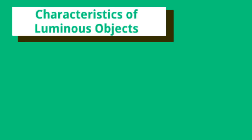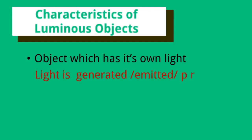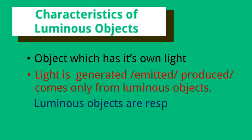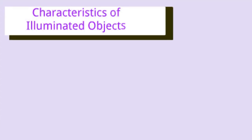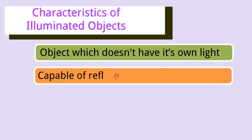Characteristics of luminous objects: a luminous object has its own light — light is generated, emitted, or produced only from luminous objects. Luminous objects are responsible for our vision. Examples we have already discussed: the Sun, candle, bulb, firefly, etc.